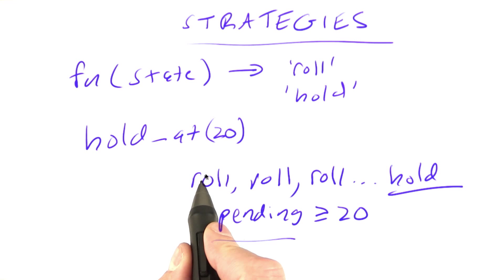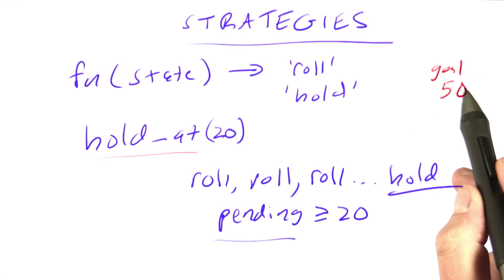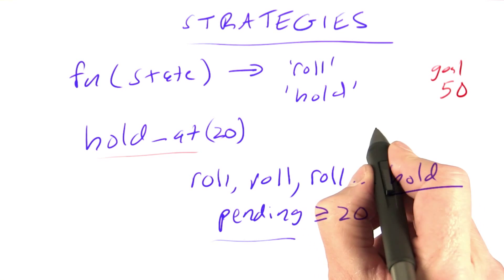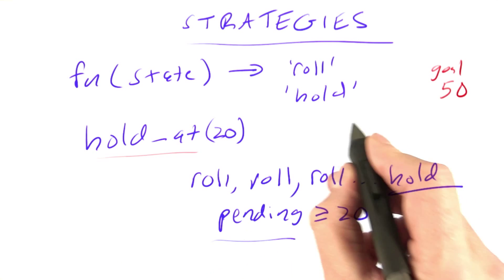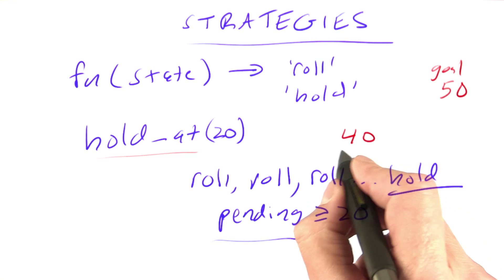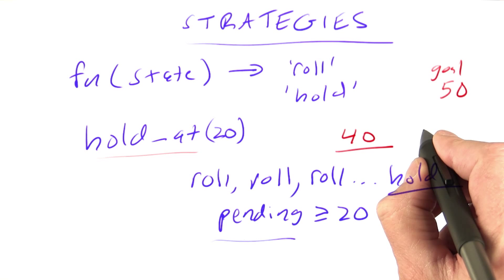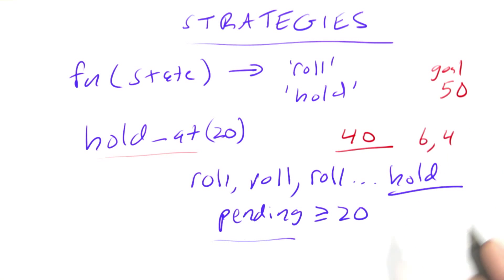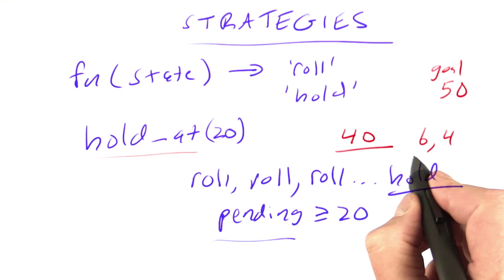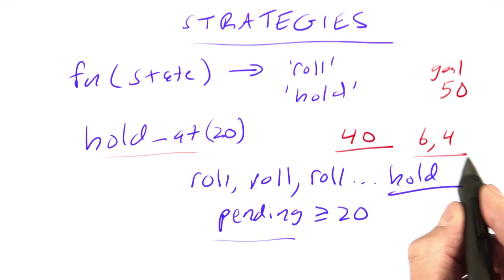And I should say there's one subtlety here that will build in to hold at, which is let's say that the goal is 50, and my score when I start my round is say 40, and then let's say I roll a 6 and a 4. Now according to hold at 20, I should keep on rolling because my pending score is only 10.